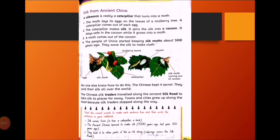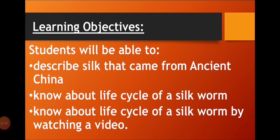Let's discuss the learning objectives for today's lesson. You will be able to describe the silk that came from ancient China and find out their secret about how they made this cloth. We are also going to read about the life cycle of a silkworm — how silk was made by this small insect. At the end of the lesson I will share a video link to learn more about the life cycle of the silkworm.